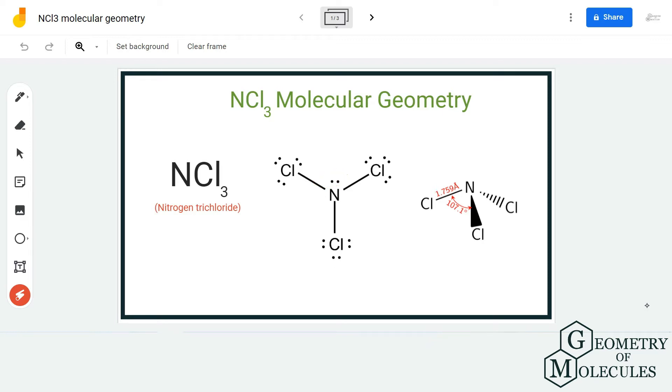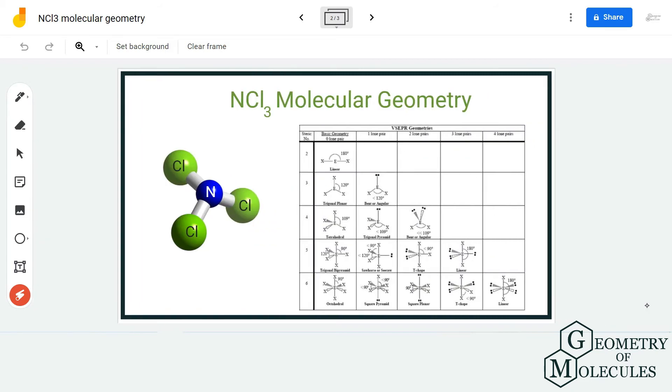Once you are clear with that, you can either check out its 3D shape or you can find out the steric number for this molecule to know the molecular geometry. Here, if you look at its 3D shape, you can see that all the chlorine atoms are spread out like this.